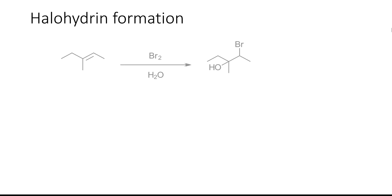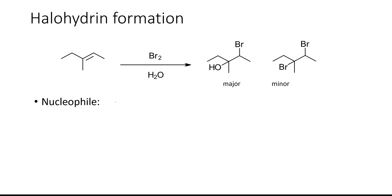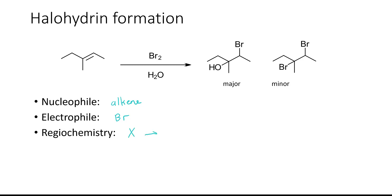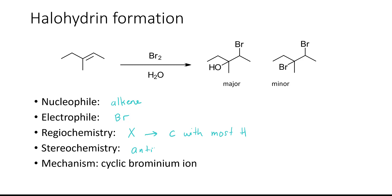However, if we do this reaction in a protic solvent such as water, then instead of the dihalide we're going to form the halohydrin. A halohydrin contains a halogen atom and a hydroxy group. The halohydrin will by far be the major product and the dihalide will be the minor product. The nucleophile is still the alkene and the electrophile is still the bromine atom. The regiochemistry will be such that the halide attaches to the carbon with the most hydrogens. The stereochemistry is also anti, and the mechanism still goes through the cyclic brominium ion.